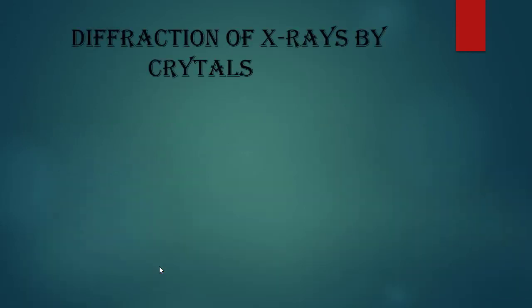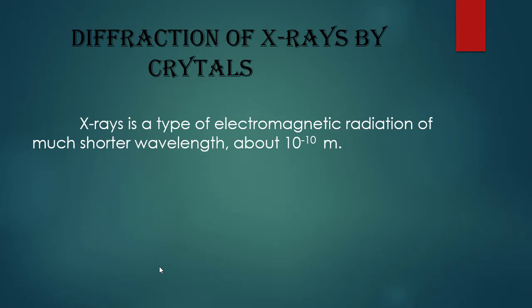Our second topic is the diffraction of X-rays by crystals. Crystals are crystalline solids with a regular arrangement of atoms. X-rays are diffractive, same as ordinary light, but they diffract from crystals. X-rays are a type of electromagnetic radiation of much shorter wavelength, of the order of 10 to the power minus 10 meters.